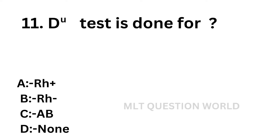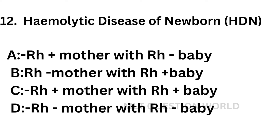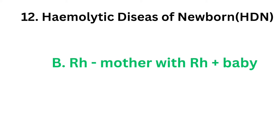Question number 11: DU test is done for — option A: RH positive, option B: RH negative. Question 12: HDN occurs in which situation? Option B: Rh negative mother with Rh positive baby, option C: Rh positive mother with Rh positive baby, option D: Rh negative mother with Rh negative baby. The correct answer is option B, Rh negative mother with Rh positive baby. HDN occurs when a child inherits an antigen from the father which is absent in the mother.